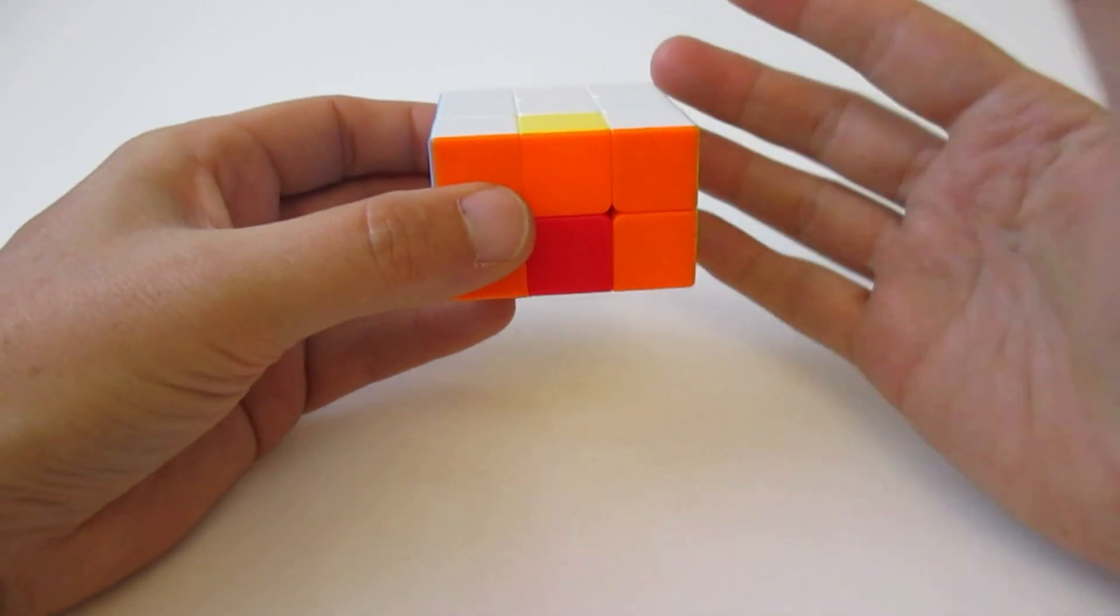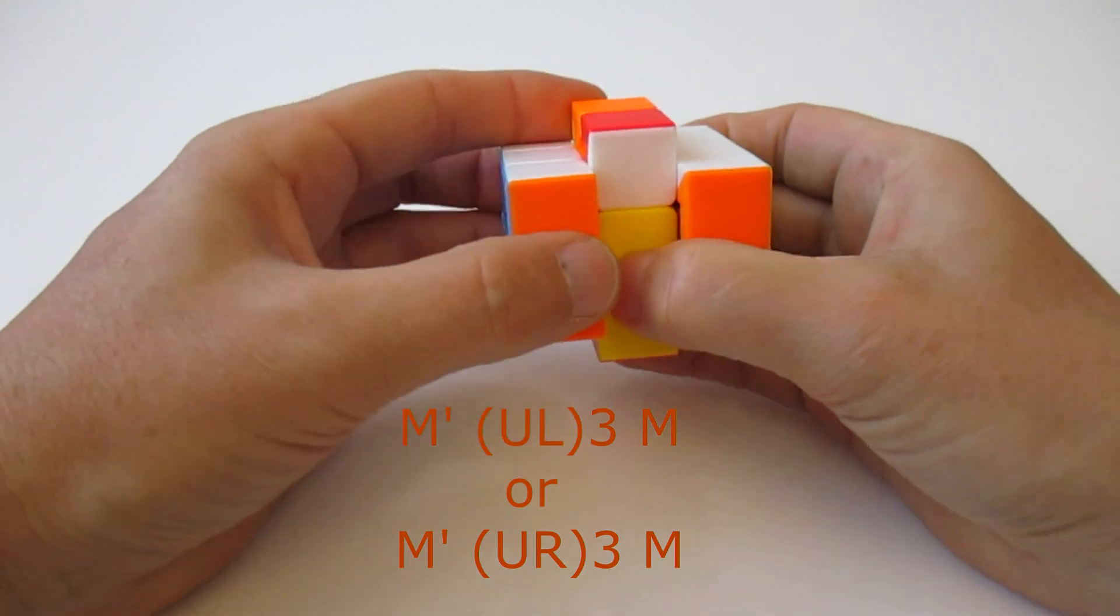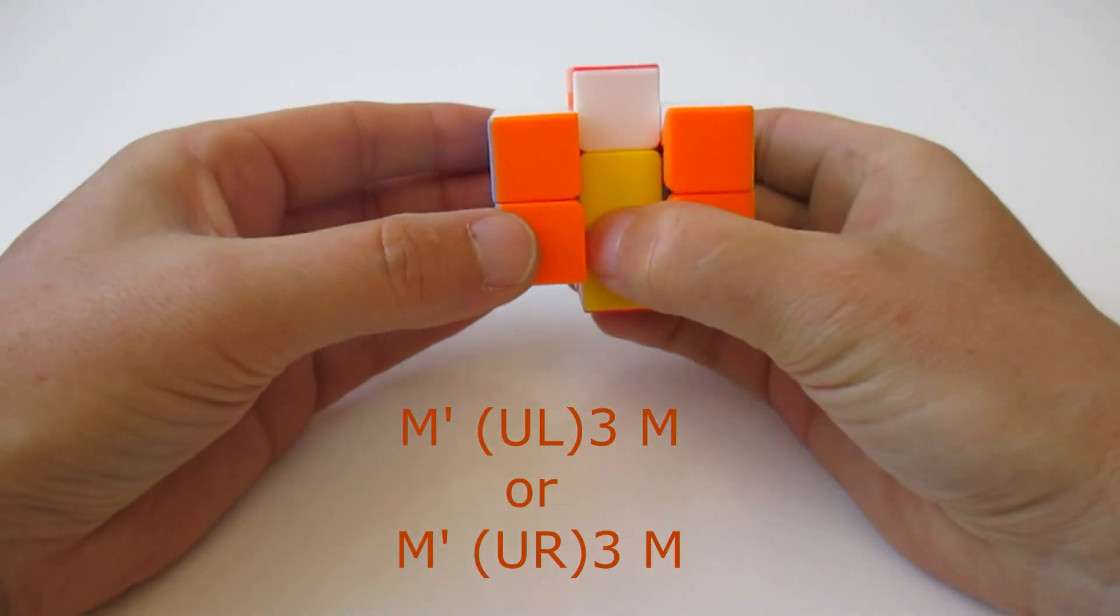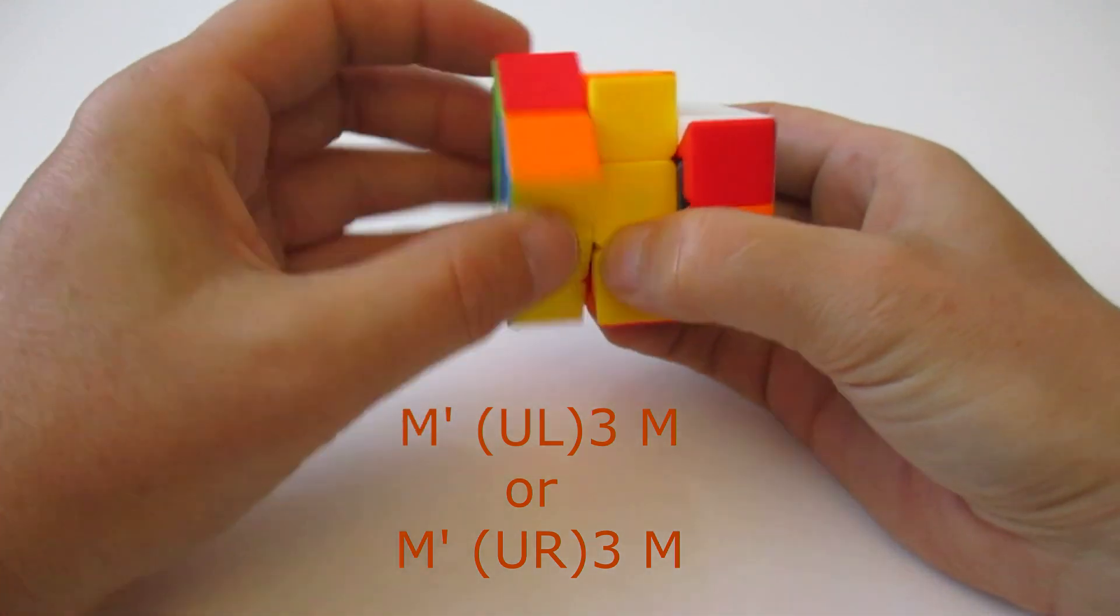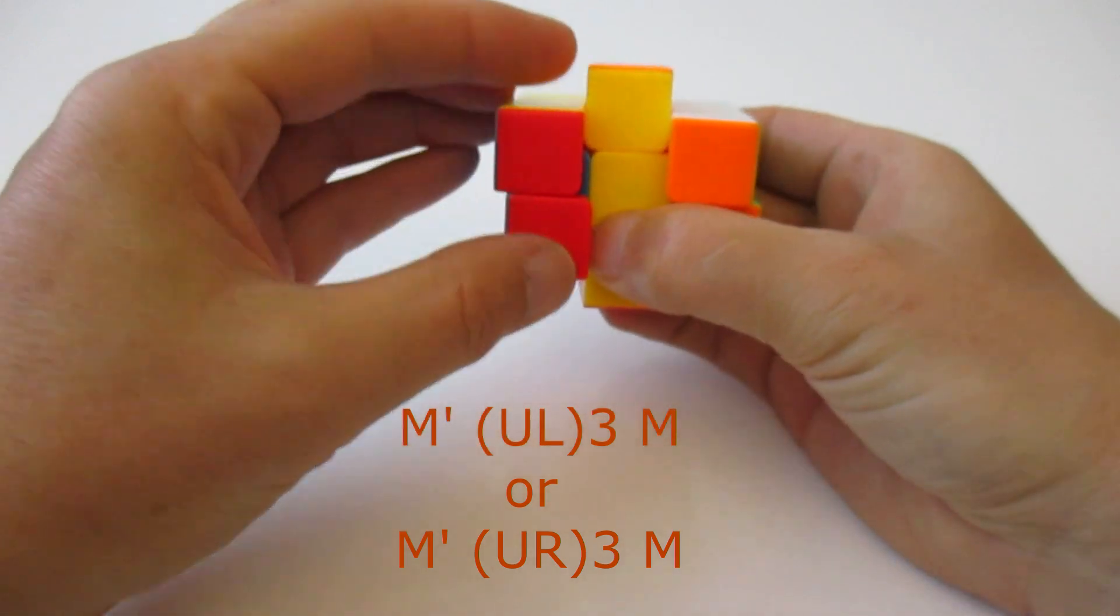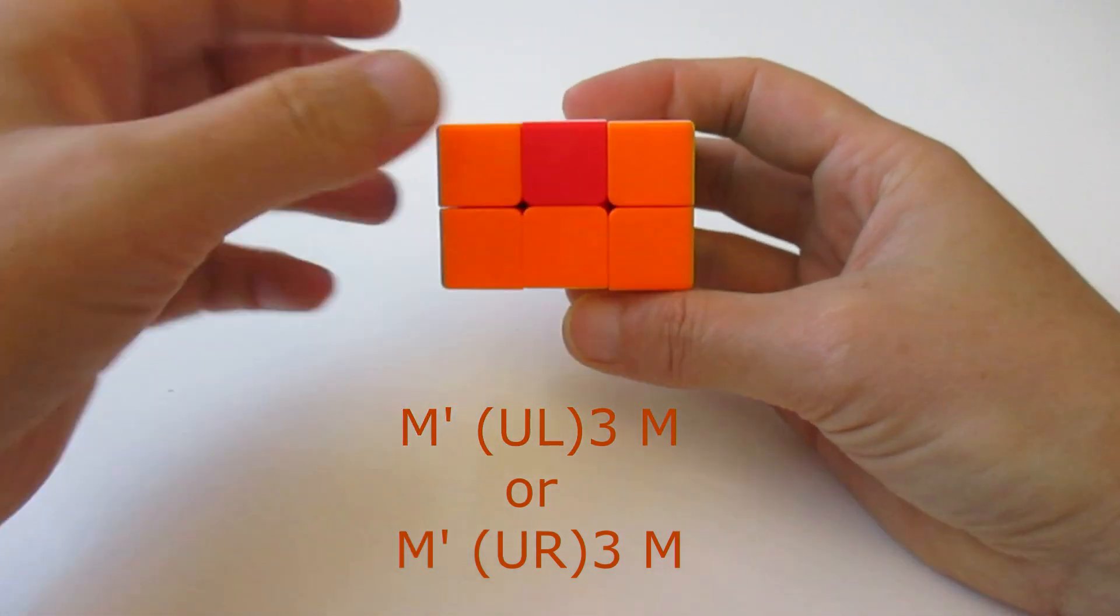So we'll do this algorithm again. But you also can do it with the right hand. So this center layer up, and up, left. First time. Second time. Third time. And so these two changed places.